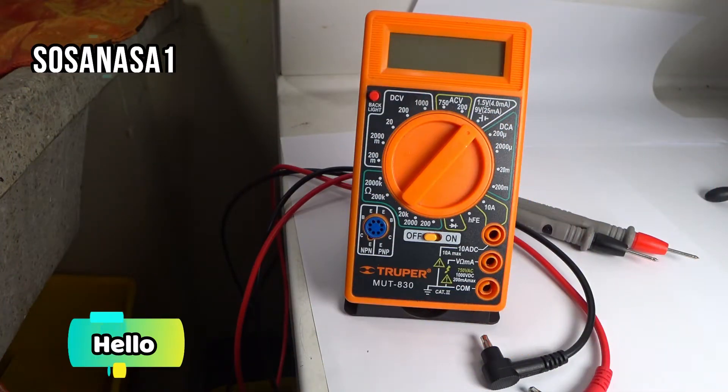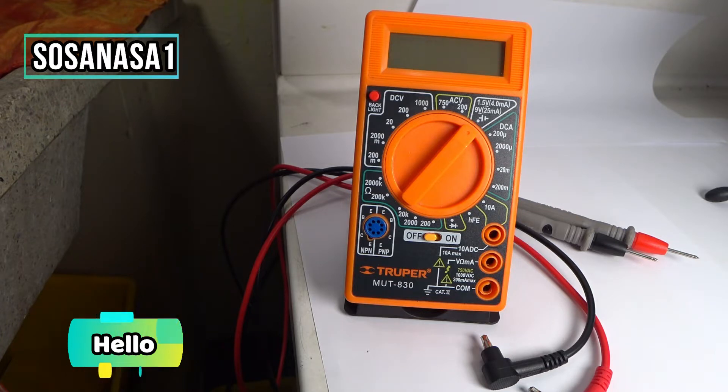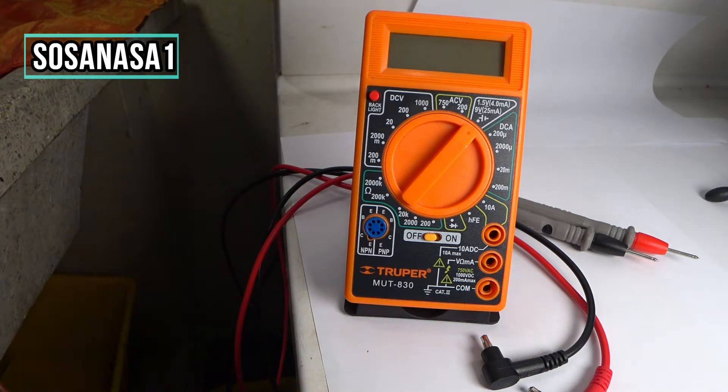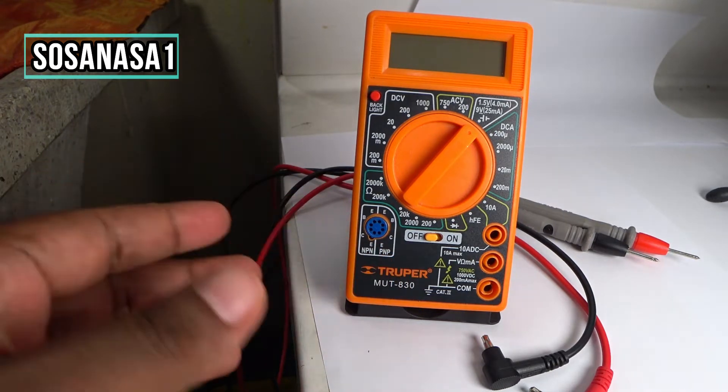Hello, this is your channel SosaNasa1, my name is Emmanuel, and now I'm going to show you how to use this digital multimeter to measure high voltage in the house. In this case, we are going to use this digital multimeter to measure 200 volts more or less.